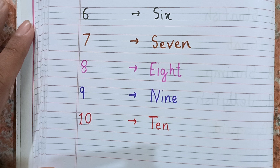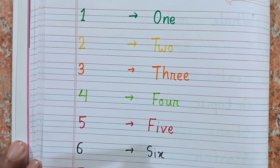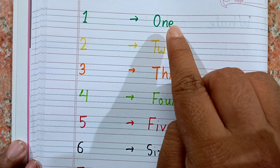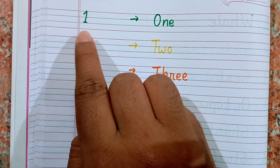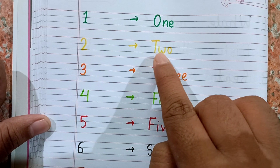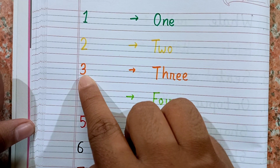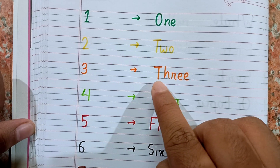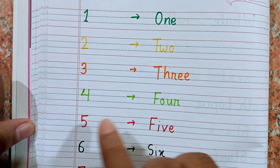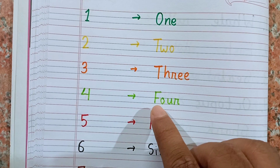Let's again count from 1 to 10. Repeat with me, kids. 1 — the spelling of 1 is O-N-E. After 1 the next number is 2 — the spelling of 2 is T-W-O. After 2 the next number is 3 — the spelling of 3 is T-H-R-E-E.